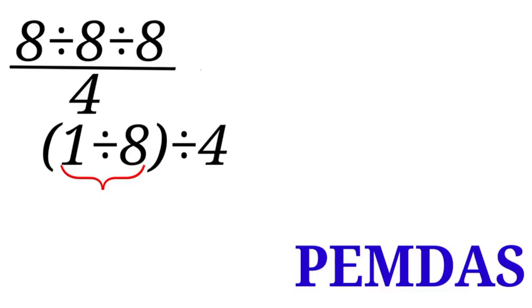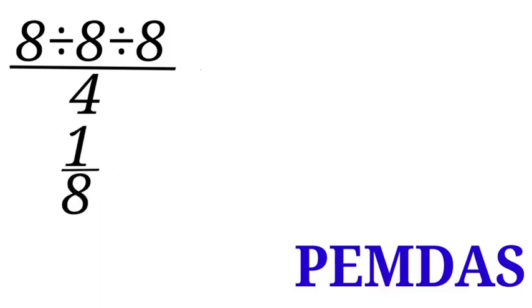1 divided by 8 can be written in fraction form as 1 all over 8. So our new expression will be 1 all over 8 divided by 4.